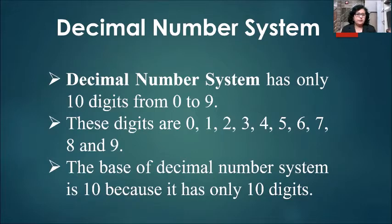First type of number system is the decimal number system. The decimal number system has only 10 digits from 0 to 9. These digits are 0, 1, 2, 3, 4, 5, 6, 7, 8 and 9. The base of decimal number system is 10 because it has only 10 digits.